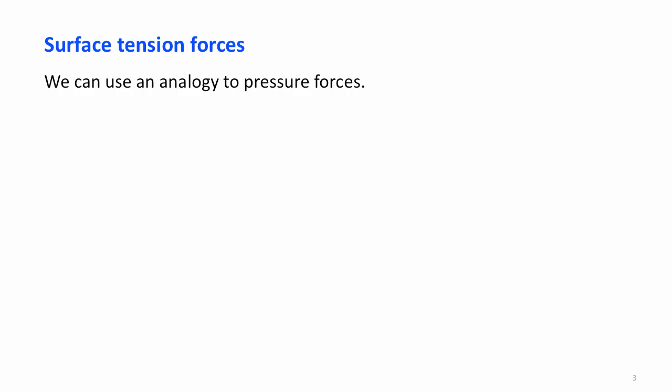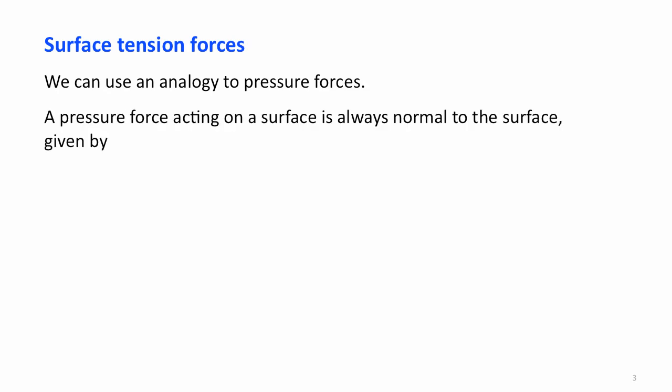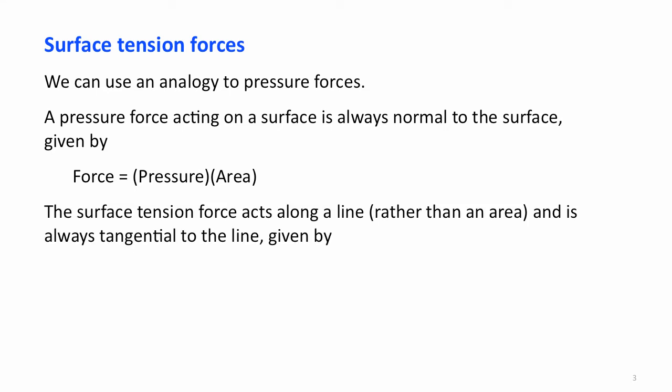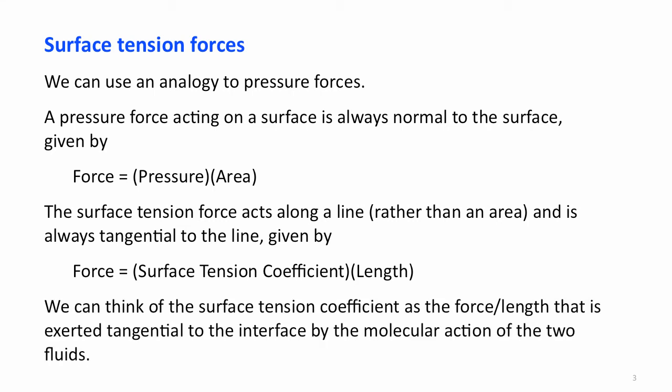Surface tension forces can be thought of by an analogy to pressure forces. A pressure force acting on a surface is always normal to the surface and is given by force equals pressure times area. In contrast, the surface tension force acts along a line rather than an area, and is always tangential to the line rather than normal to the surface. This is given by force equals surface tension coefficient times length. So we can think of the surface tension coefficient as the force per unit length exerted tangential to the interface by the molecular action of the two fluids — similar to pressure, which is the force per unit area exerted normal to the surface.